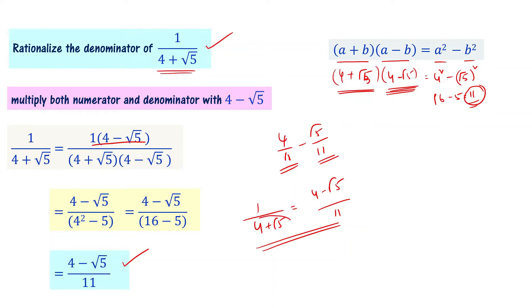Here the denominator had an irrational number. By rationalizing the denominator of 1 by (4 plus root 5), we obtained (4 minus root 5) divided by 11, which is exactly equal to 1 by (4 plus root 5). That is the idea of rationalizing the denominator.